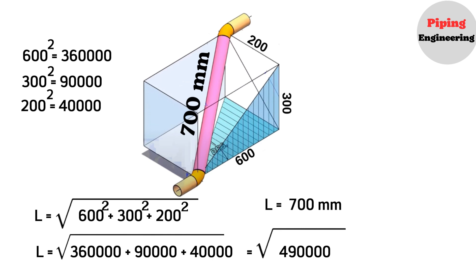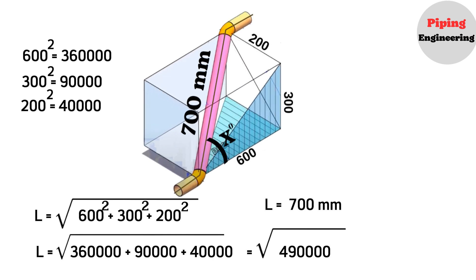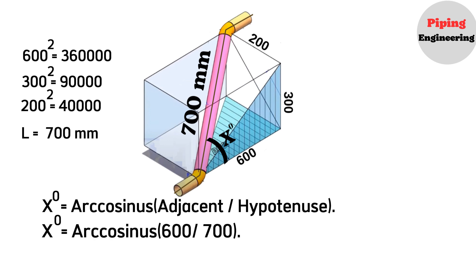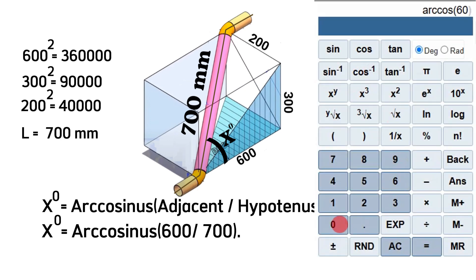Now let's calculate the degree of the elbows. To calculate the degree of the below elbow, we will use this formula: X degree equals arccosinous (adjacent divided by hypotenuse). Substitution: X degree equals arccosinous (600 divided by 700). Using a scientific calculator, we found that the below elbow's degree will be approximately 31 degrees.